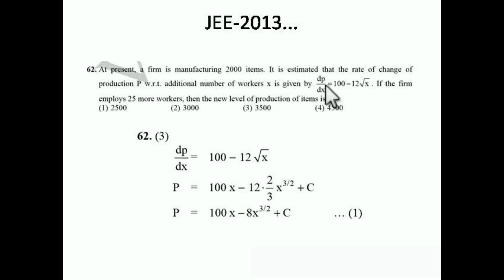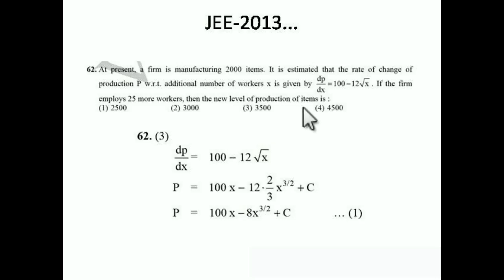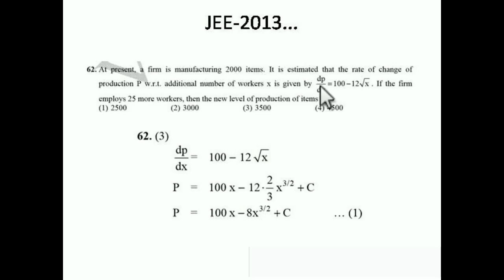So if the rate of change of production with respect to x is given, and the firm employs 25 more workers, we have to find the new level of production. If no additional workers are added, the item count is 2000, meaning when x = 0, p = 2000. We have to find the value of p when x = 25.